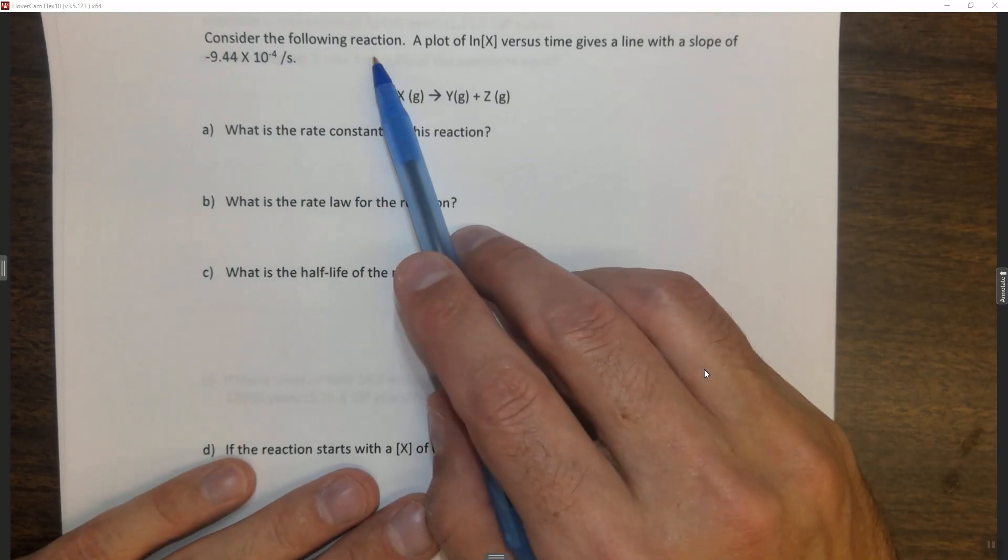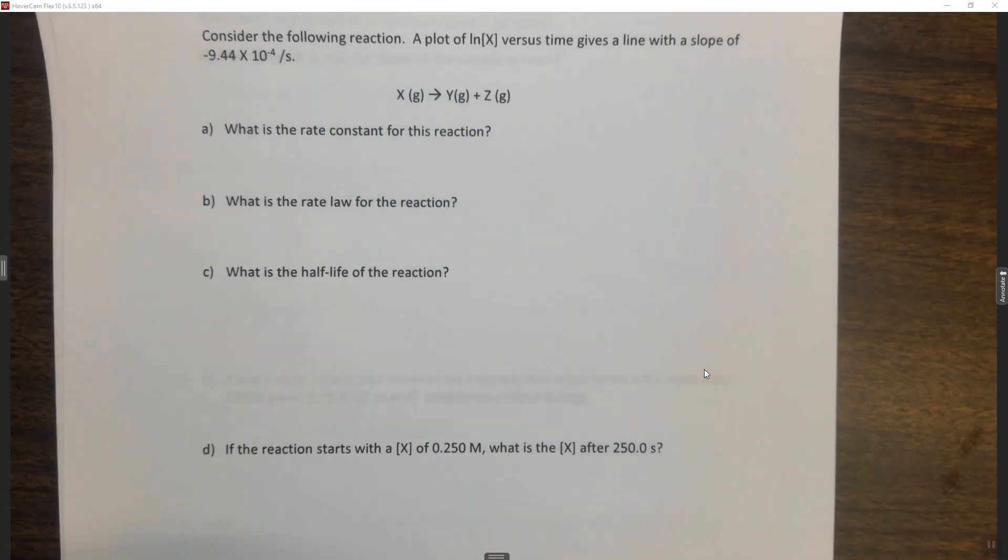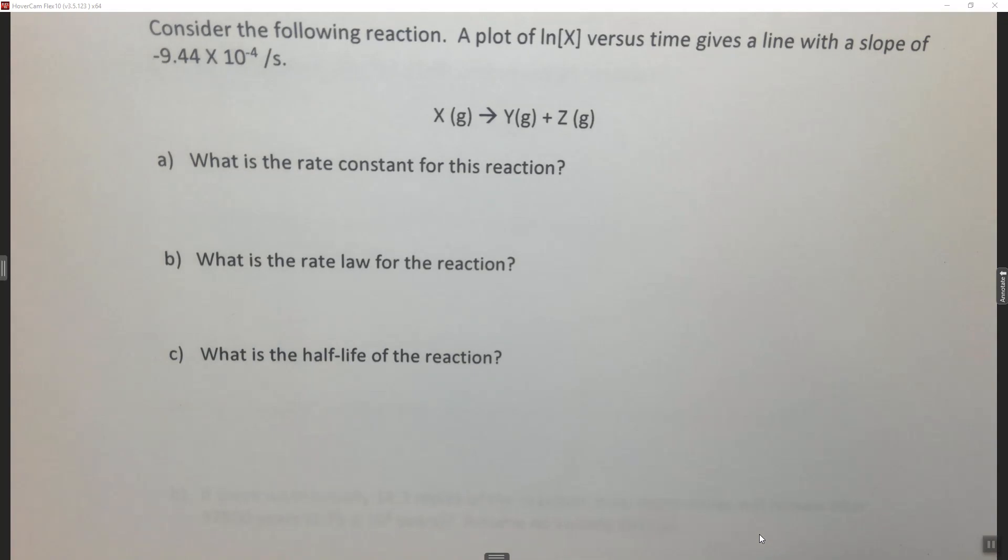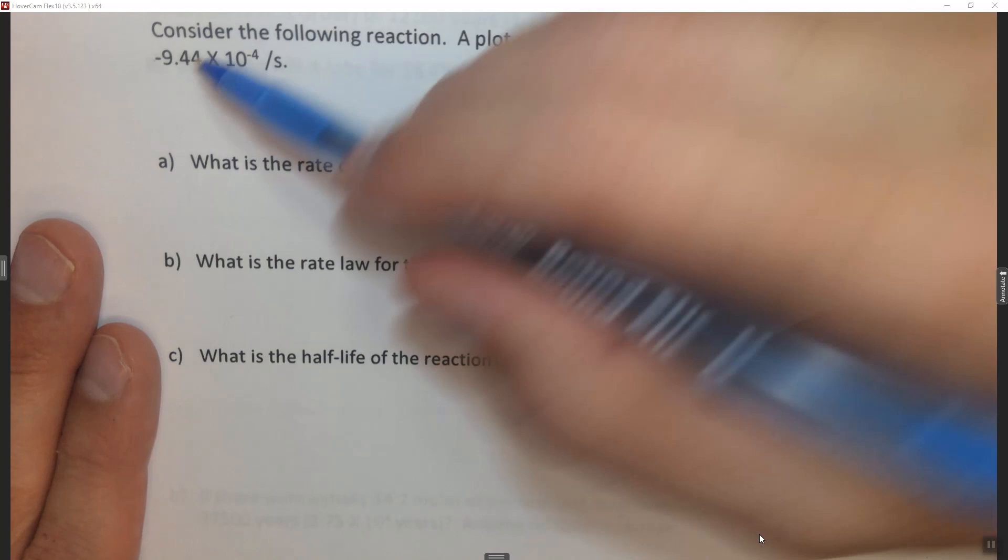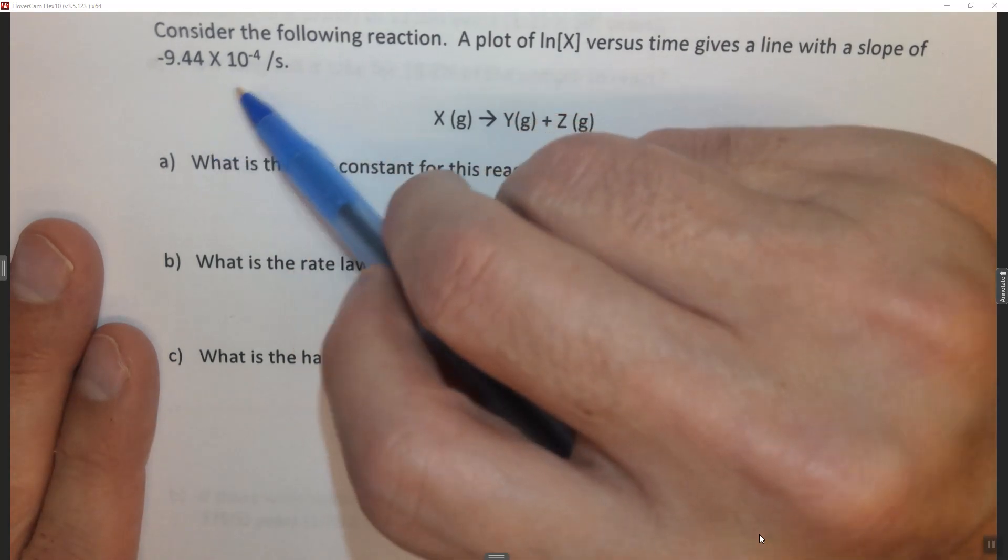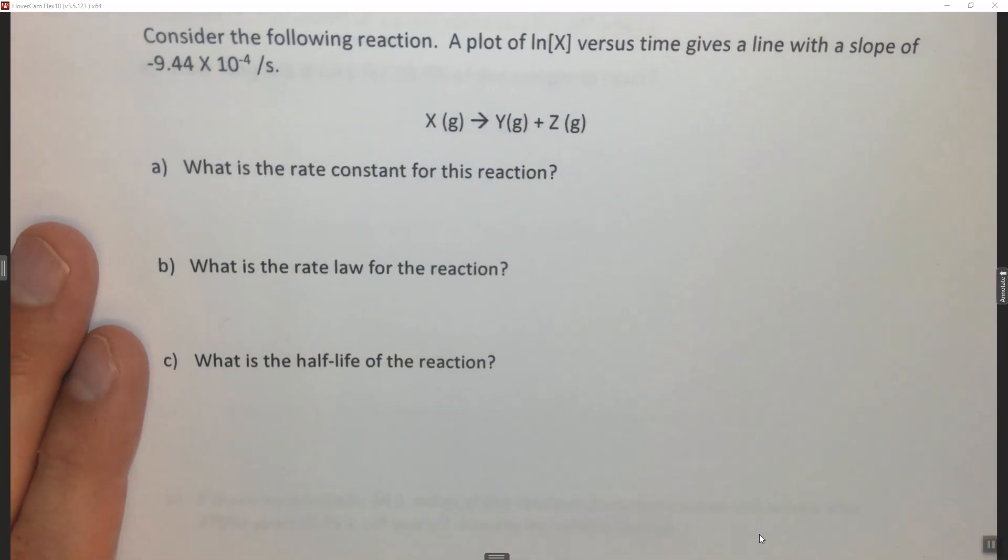All right, it says consider the following reaction. A plot of ln of concentration of X versus time gives a slope of a line that's minus 9.44 times 10 to the minus 4 per second.